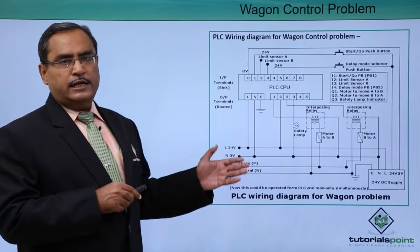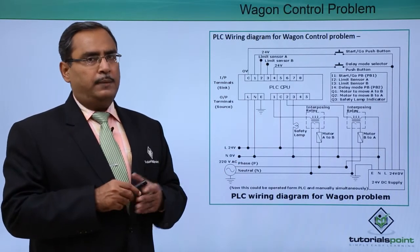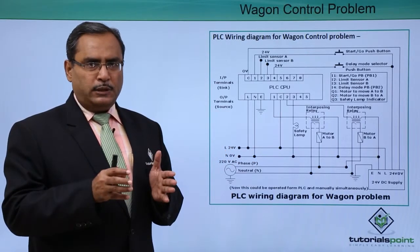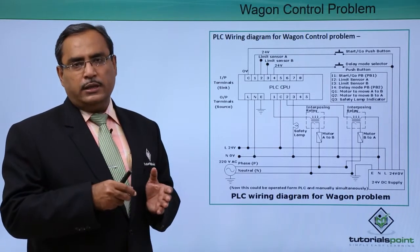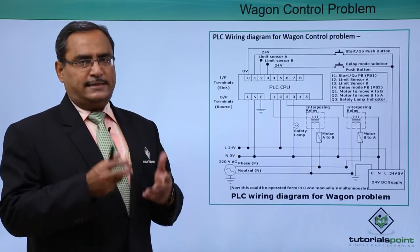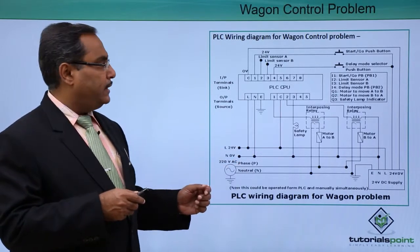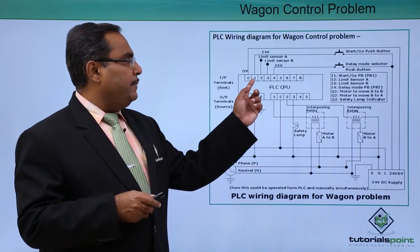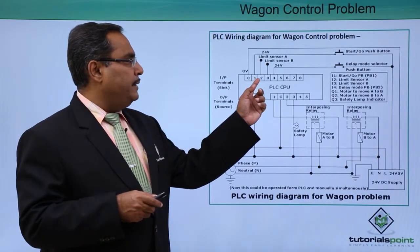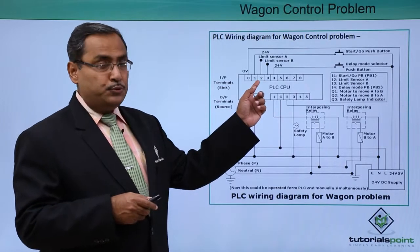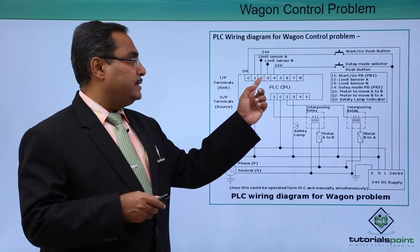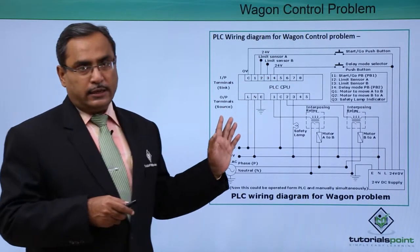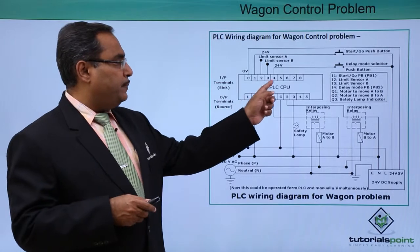This is the respective PLC wiring diagram I am proposing. This diagram will change depending upon the PLC model and make, and depending on the accessories installed. Here we have the input terminals: limit sensor A, limit sensor B, the start push button, and the delay selector push button. These are the respective inputs.